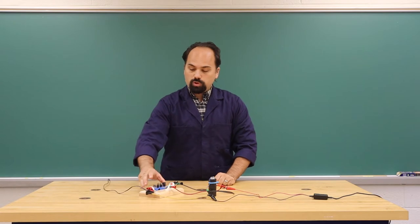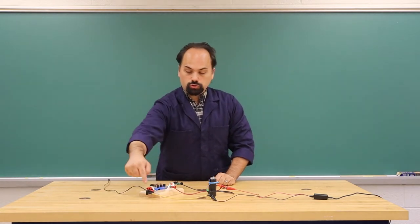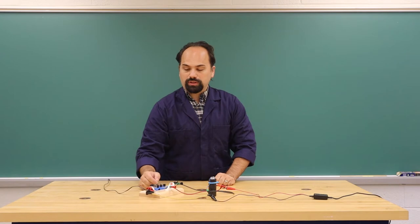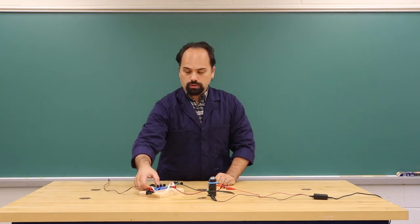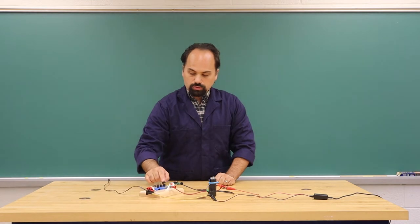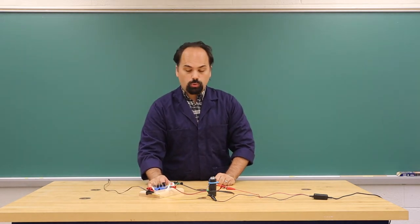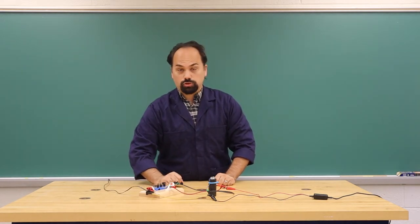In this lab we will be using one side of that circuit to charge, so it will include the 5 volt power supply and the charging resistor, and the other side to discharge, so we will only have the discharging resistor.